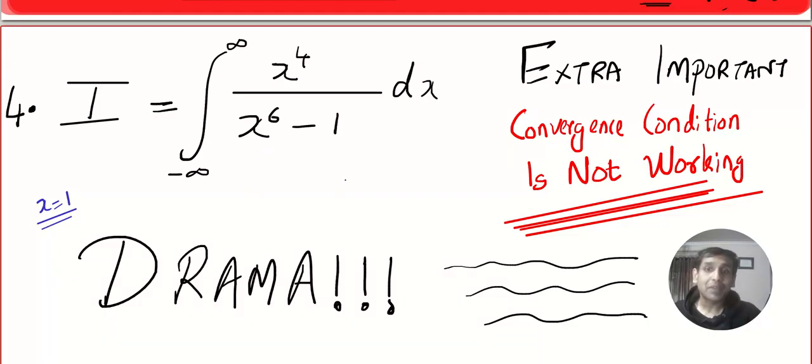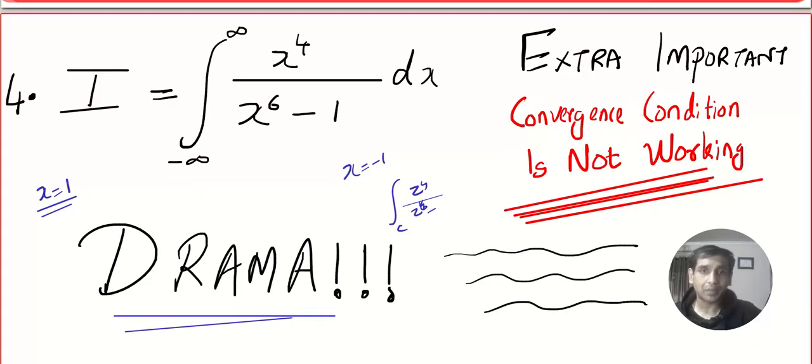What will happen if I plug in the value x equal to minus 1? The denominator will vanish. Anyway, you can go for the usual drama like what you call integral over C: z to the power 4 by z to the power 4 times 6 minus 1, etc. You do that drama and you call the contour like this.